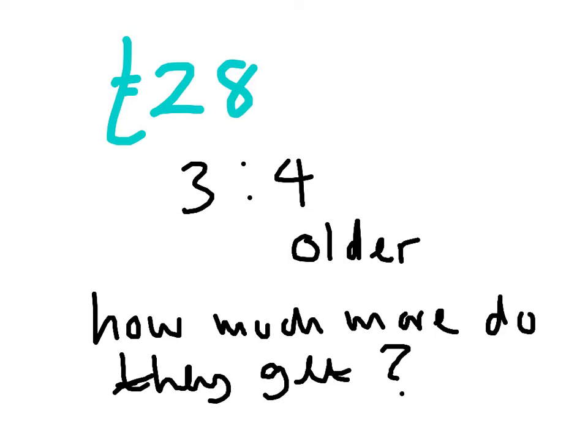So I take the 28 pounds, and as it's split into 3 to 4, I should know that that's going to be 7 parts altogether. So if I divide 28 by 7, then that will give me 4 pounds.